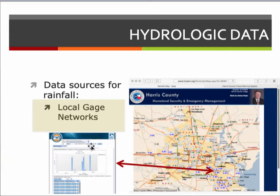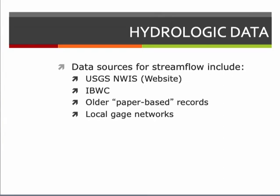Sources for stream flow include the United States Geological Survey through the National Water Information System, the International Boundary Waters Commission, and paper-based records — which are going away fast. With luck they get scanned and archived before being destroyed, but many go away forever. If you're chasing data, don't give up on paper-based records; someone may have them in a filing cabinet.